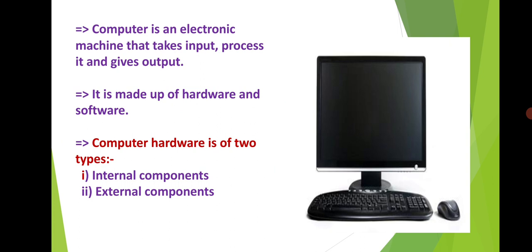Basically a computer is made up of two parts: hardware and software. Computer hardware is of two types: internal components and external components.